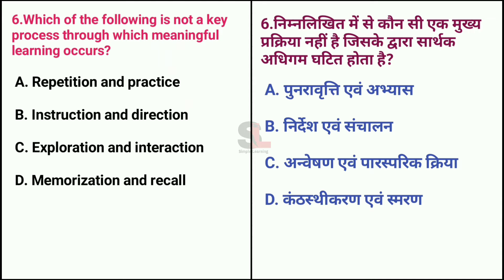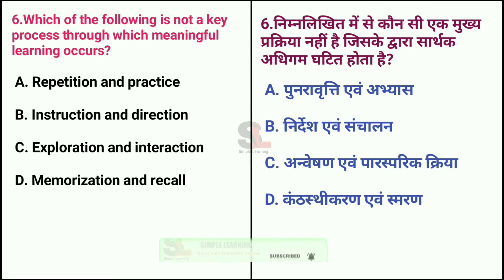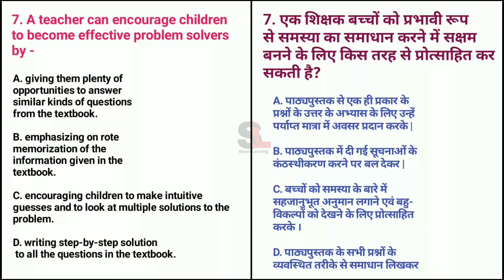Question No. 6. Which of the following is NOT a key process through which meaningful learning occurs? Option A: Repetition and Practice. Option B: Instruction and Direction. Option C: Exploration and Interaction. Option D: Memorization and Recall. The answer is Option D: Memorization and Recall.